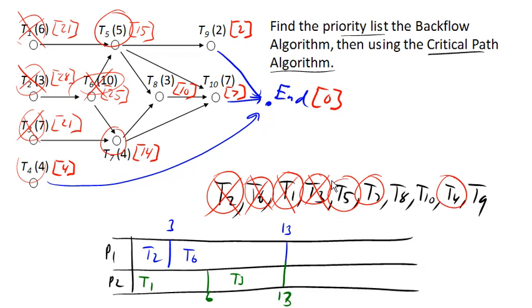So I guess task 4 is going to have to wait because we're assigning task 5 and task 7. So task 5 has a time of 5, bringing us out to 18. And task 7 here has a time of 4, bringing us out to 17.